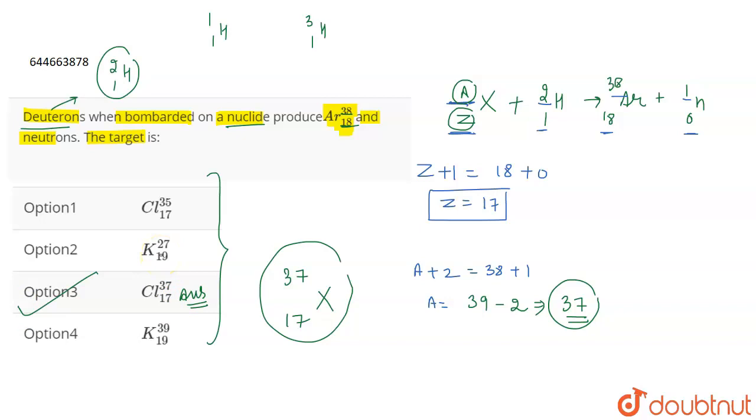So, in such questions, you just have to write the nuclear reaction and balance the atomic numbers and the mass numbers. Or basically, you have to balance the electrons, protons and neutrons in both the left-hand side as well as the right-hand side. So, the correct answer is going to be option 3. That's all for the question.